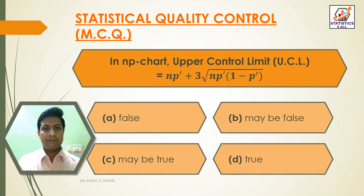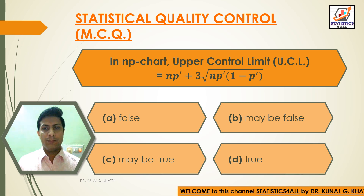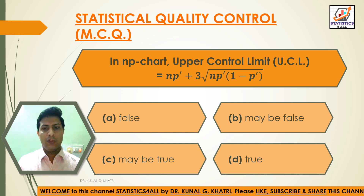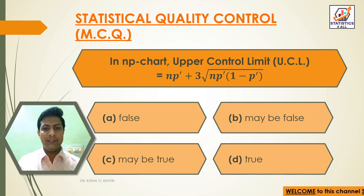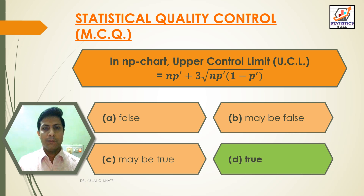Next question: in NP chart, upper control limit UCL is equal to NP' plus 3 into under root NP' into bracket (1 minus P'). Option A: false, Option B: may be false, Option C: may be true, Option D: true. Answer: Option D — true. In NP chart, UCL is equal to NP' plus 3 into under root NP' into bracket (1 minus P').